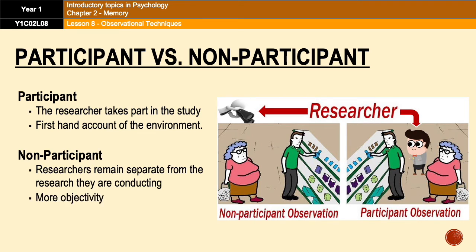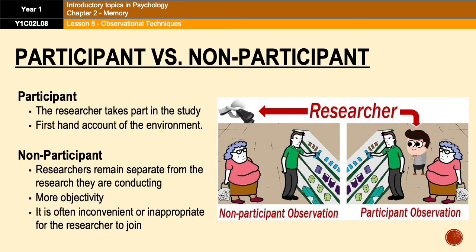Non-participant observations are often used when it's impractical or even impossible to join a particular group. For example, researchers are often interested in the behavior of children when they first start school. However, it would be impractical and more importantly inappropriate for the researcher to join the children in playing, so in that case non-participant observations are the only option.